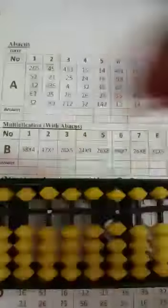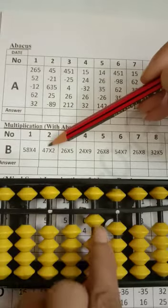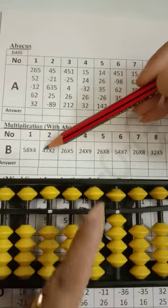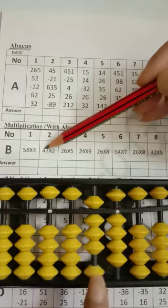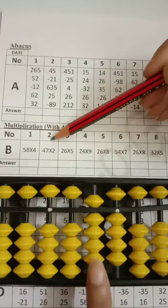Question number 2: 47 multiply by 2. 2 times 7 is 14. 10 and 4. Then 2 times 4 is 8. We have 8. 5, 6, 7, 8. Your final answer for question number 2 will be 94.